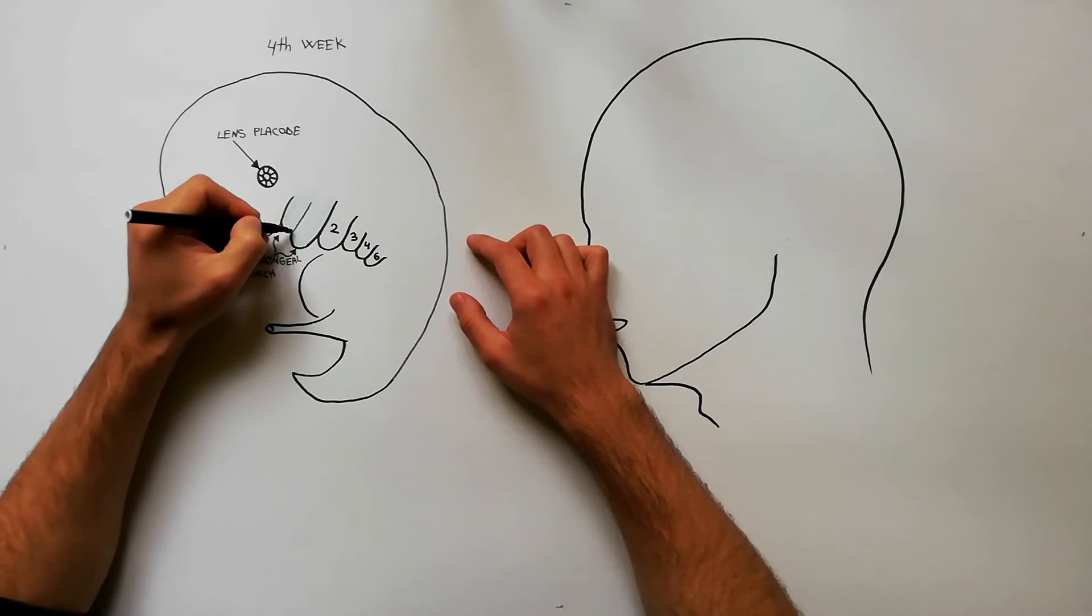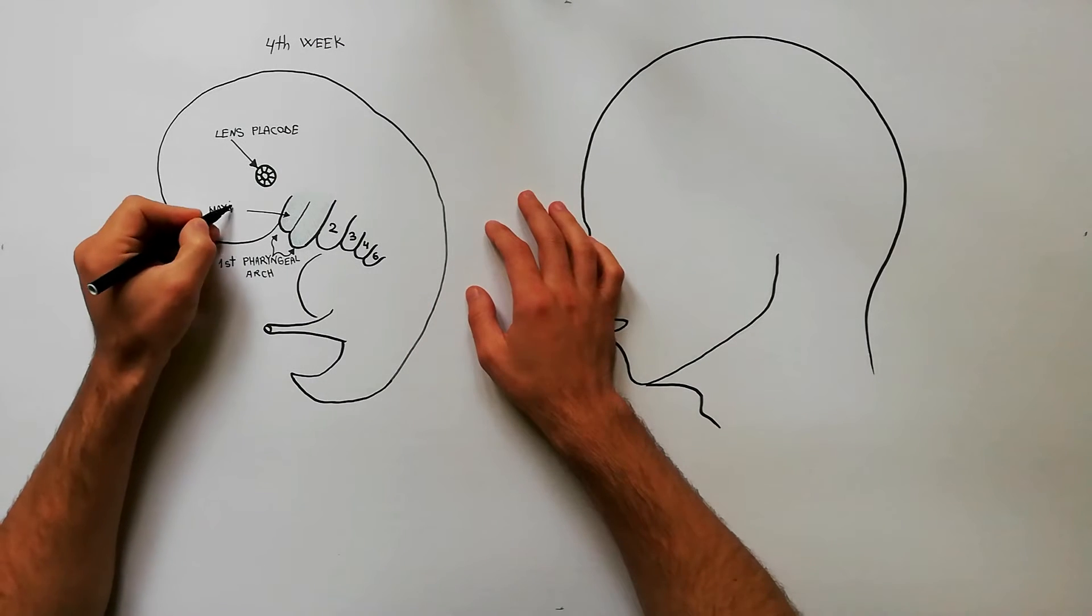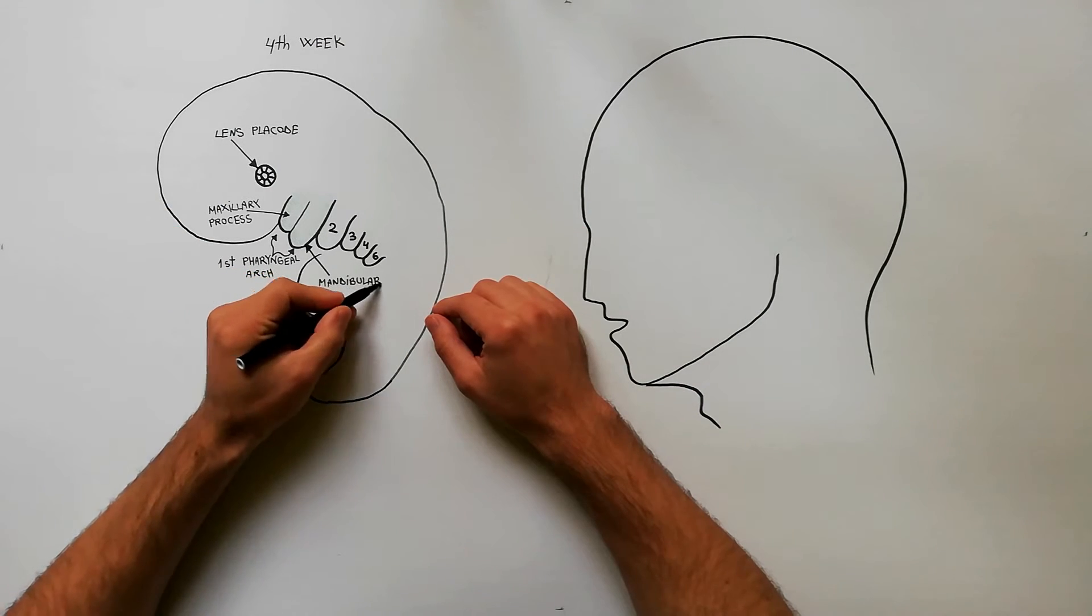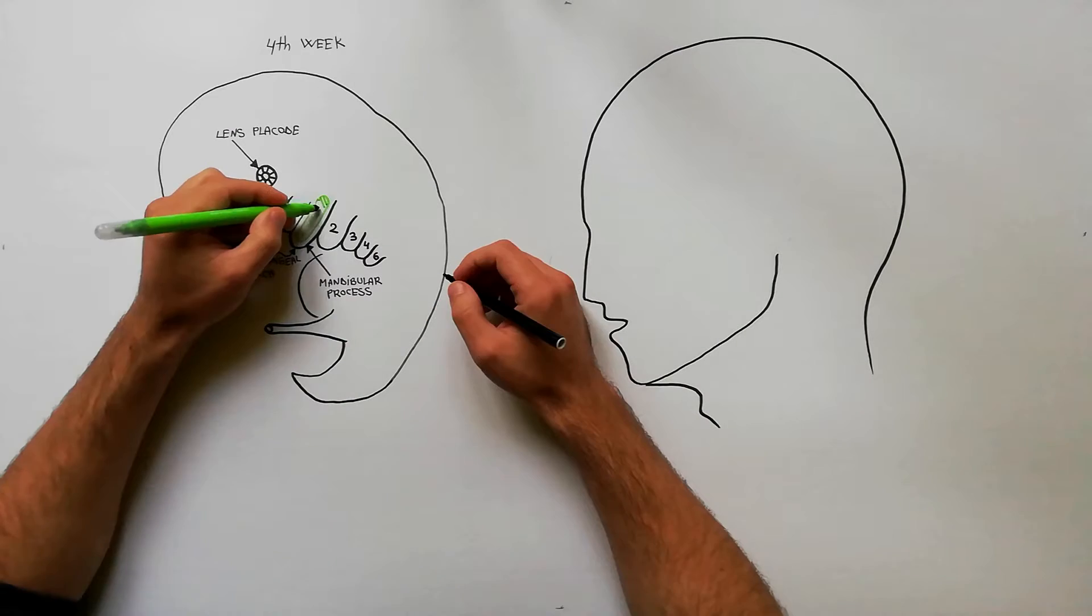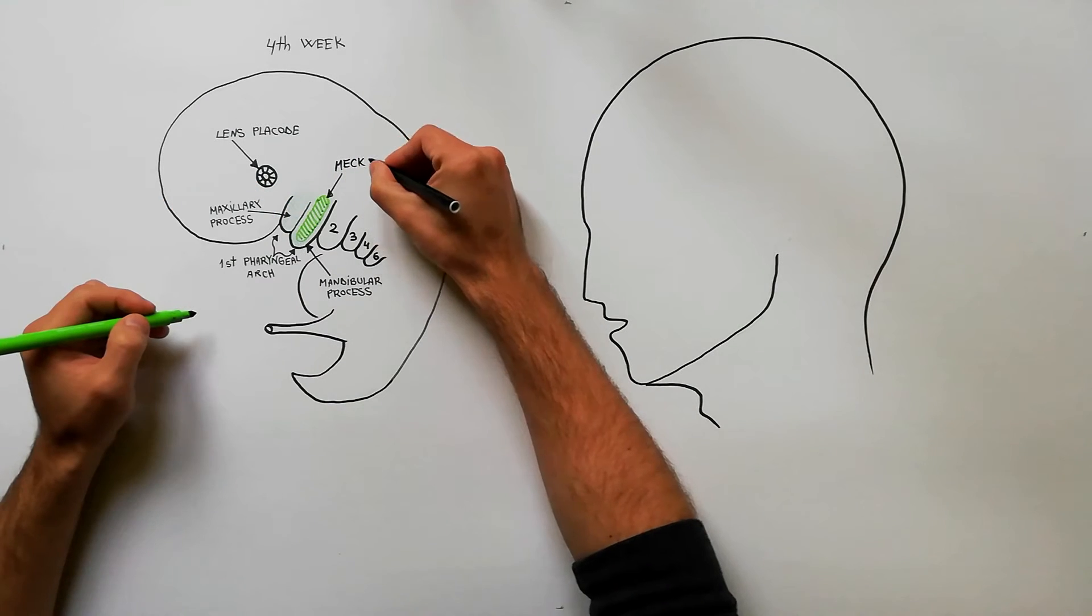This arch divides into a maxillary process and a mandibular process. The mandibular process contains the Meckel's cartilage.